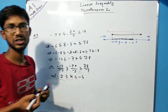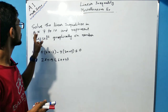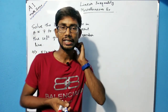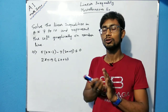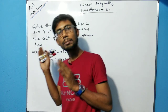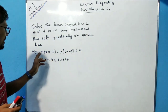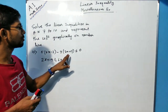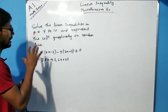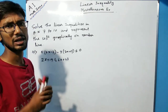The next question says: solve the linear inequality in questions number 7 to 10 and represent the solution graphically on a number line. From question number 7 to 10, you have to solve the questions and represent the solution graphically on the number line. I am solving question number 10 here, and the remaining questions you should try yourself.